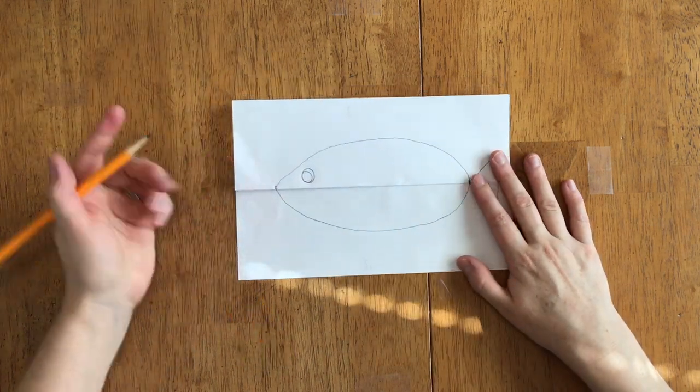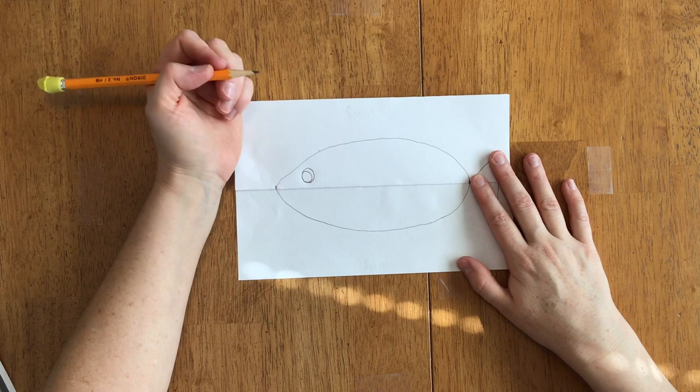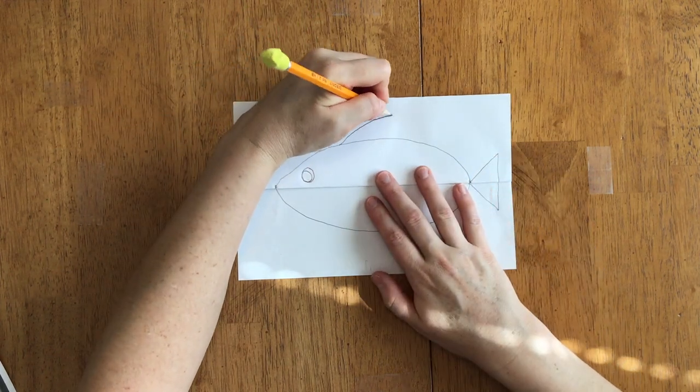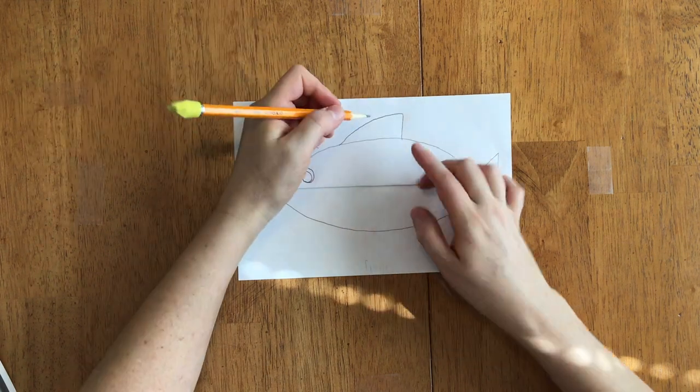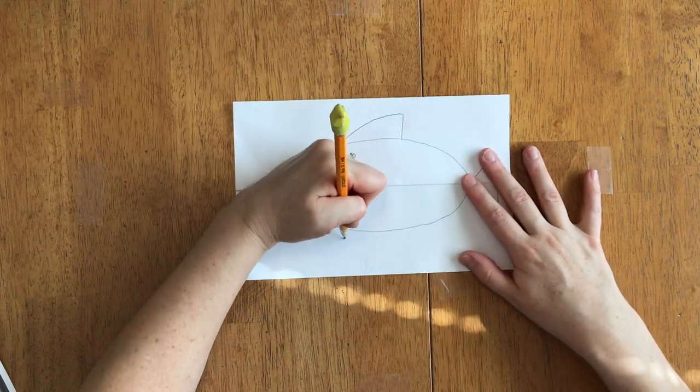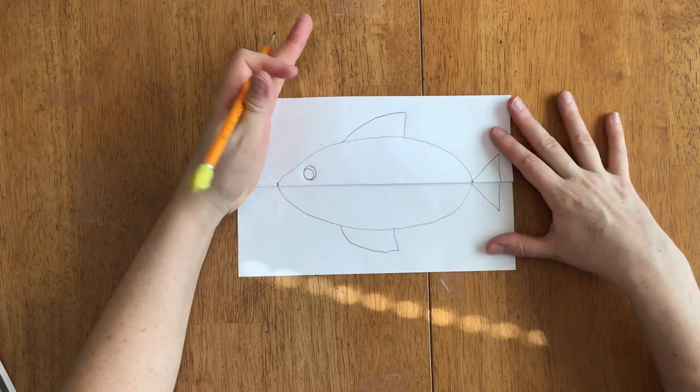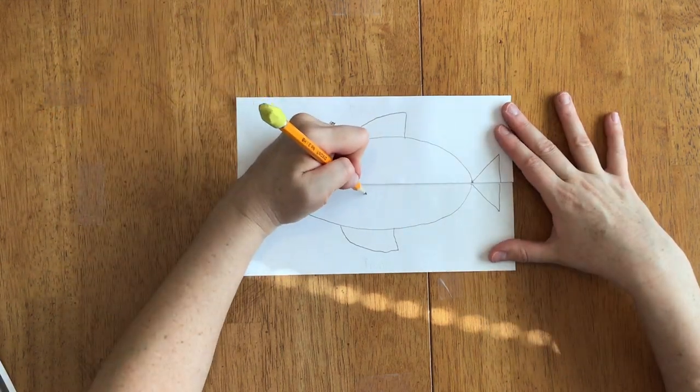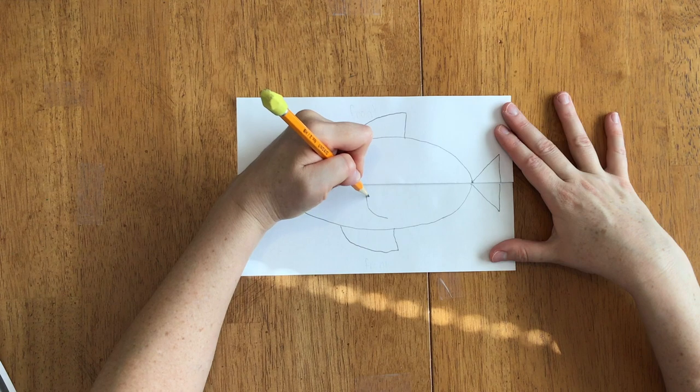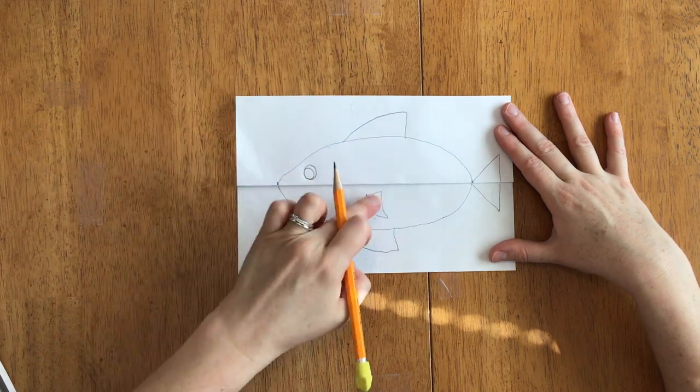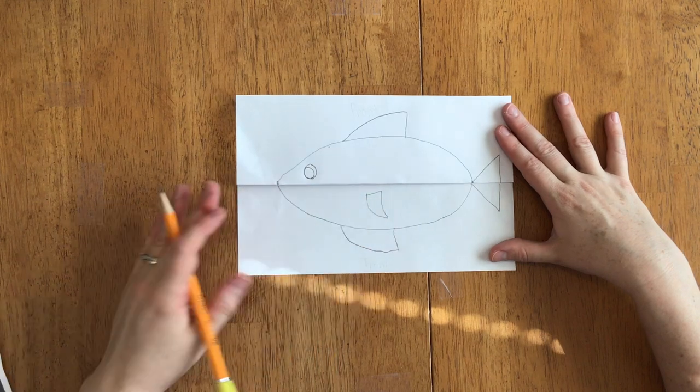Alright, so now he needs some fins. So let's add one up here. This one's gonna be a triangle and your fin, you can draw that any way you want. I'm gonna make one over here at the bottom, and if you want you can add another little fin down here. So let's see, maybe kind of like that. But you do not have to add that fin if you don't want to.